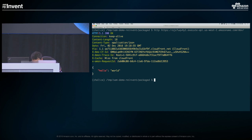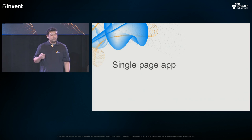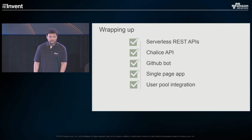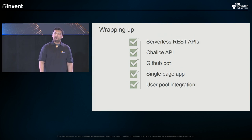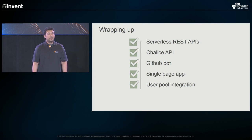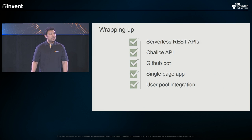That was the bonus feature — again, not yet in the Chalice release but coming soon. To recap the full talk: we looked at serverless REST APIs, Chalice APIs with routing components and features that make application development easier, sample applications including a GitHub bot covering multi-file apps, secrets management, and troubleshooting with logs, and a single-page app covering SDK generation and Cognito User Pools integration. And there was the bonus SAM integration demo.